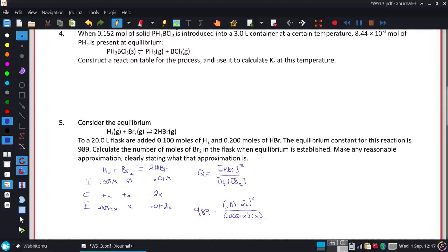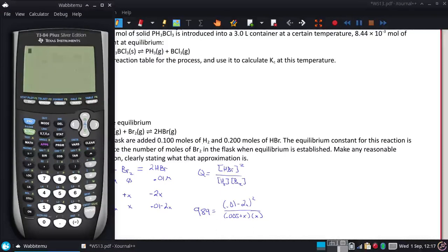And we're going to go ahead and solve this with our graphing calculator. I'm going to put this equation in just like it says. So 0.01 minus 2x squared times 0.005 plus x inversed times just x inversed. And now I'm going to move this over. So everything on the left is just 0. So minus 989.